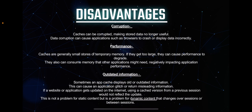The next disadvantage is outdated information. Sometimes an app cache displays old or outdated information, which can cause application glitches or return misleading information. If a website or application gets updated on the internet, using a cached version from a previous session would not reflect the update. This is not a problem for static content, but it is a problem for dynamic content that changes between sessions. Additionally, caching memory is more expensive than other types of memory like primary and secondary memory, and its storage capacity is limited.